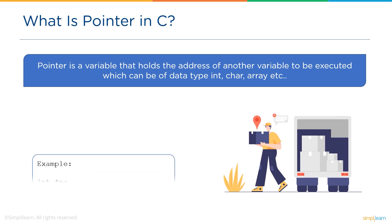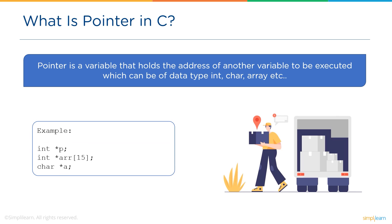Let's look at an example: int asterisk p, where p is a pointer variable holding the address of another variable of type integer. Similarly, a pointer variable can hold the address of a variable of type char, float, array, etc.